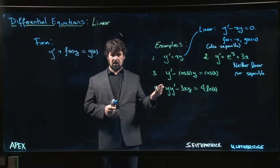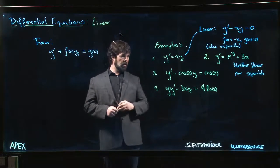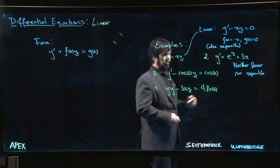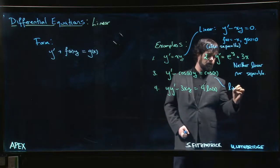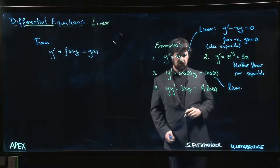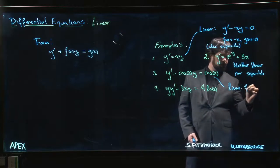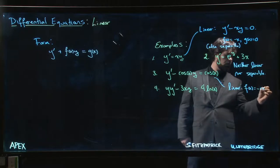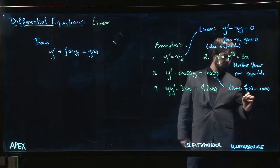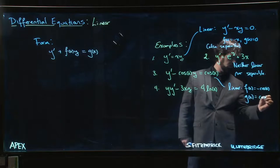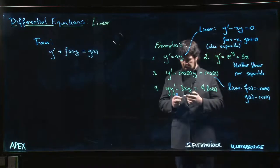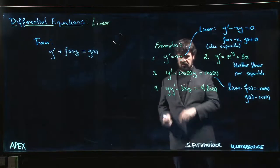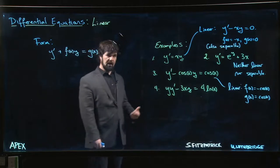What about the third one? The third one certainly is linear. It's a linear equation. We have f of x is equal to minus cosine x, g of x is equal to cos x. It's fine if we have a nonlinear function of x. It's if we have some function of y that's when we are no longer talking about a linear equation.